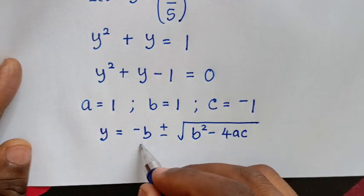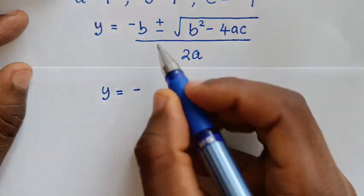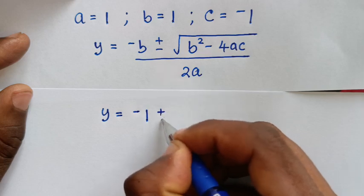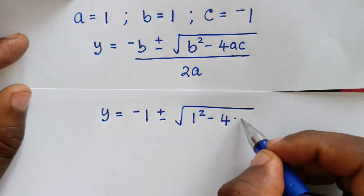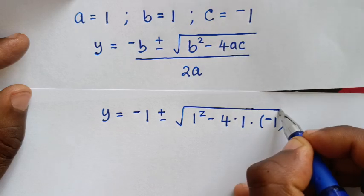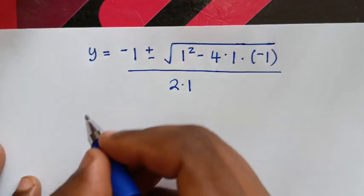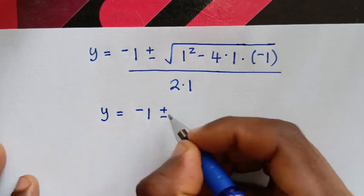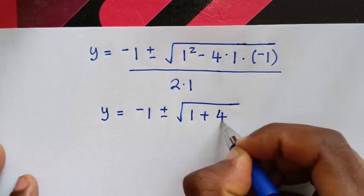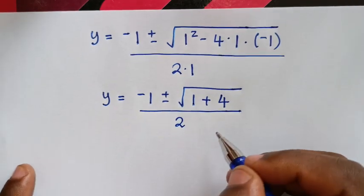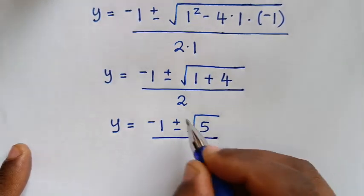Substituting: y = (−1 ± √(1² − 4×1×(−1))) / (2×1). Since 4×1×(−1) = −4, the minus and minus give plus 4. So y = (−1 ± √(1 + 4)) / 2, which gives y = (−1 ± √5) / 2.